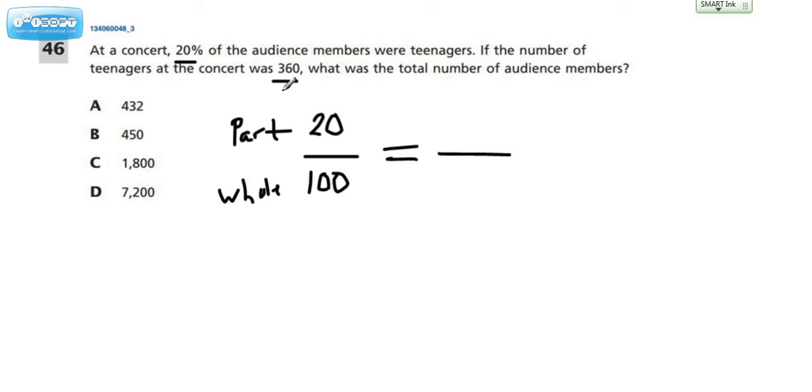Now, if we take a look at this number, 360, is that the all of it, or is that the part of it number? Let's re-read it again to try to figure it out. If the number of teenagers at the concert was 360, what was the total number of audience members? So we don't know the all of it number. We're going to put a W there for the whole. But we do know the part. We know the part's 360.